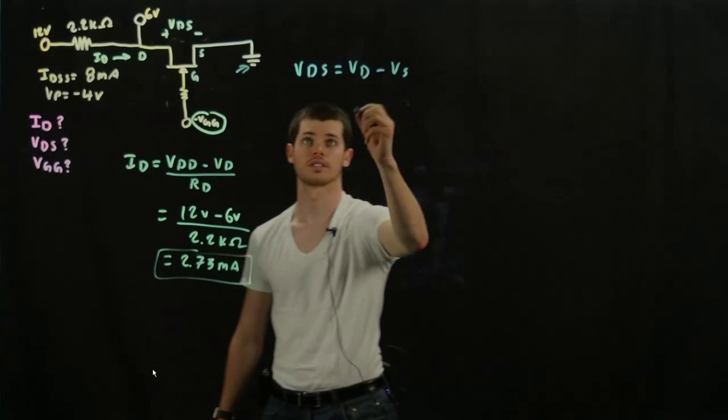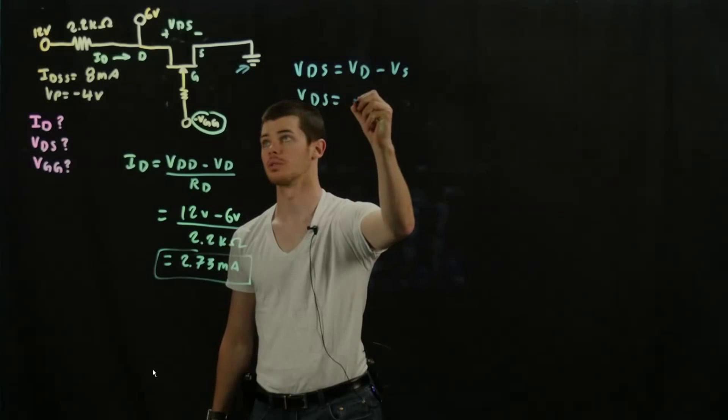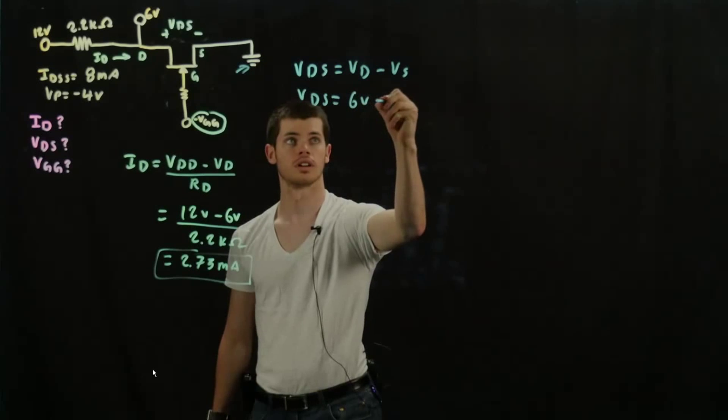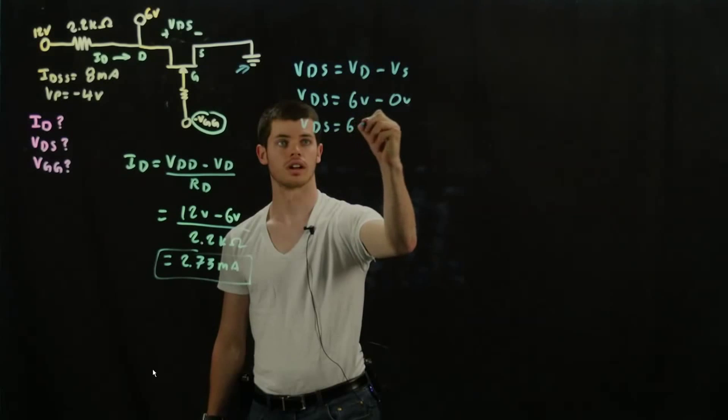So since we know VD already, VDS is just equal to 6 volts minus 0 volts. And we get a VDS of 6 volts.